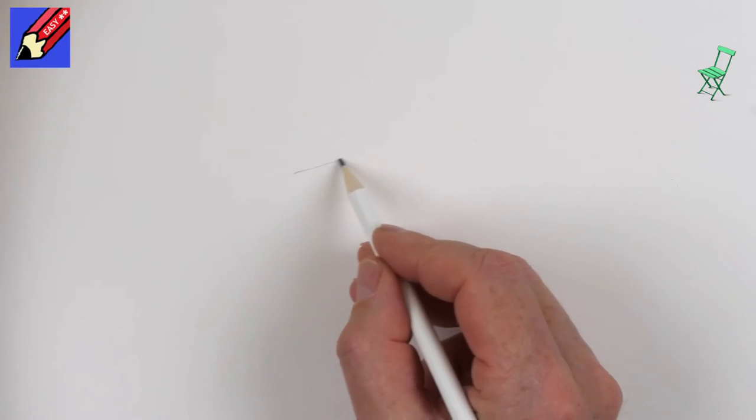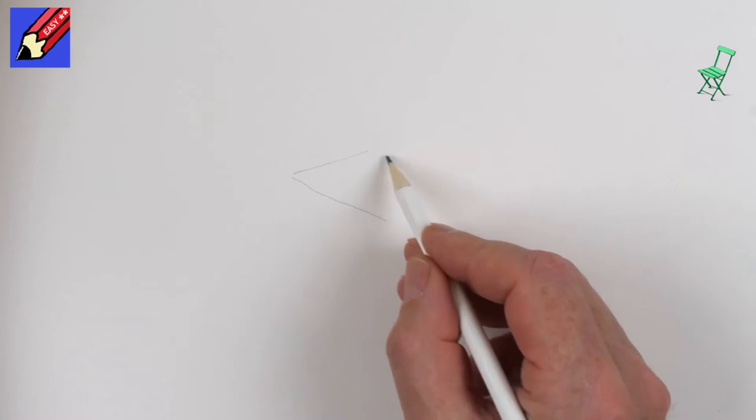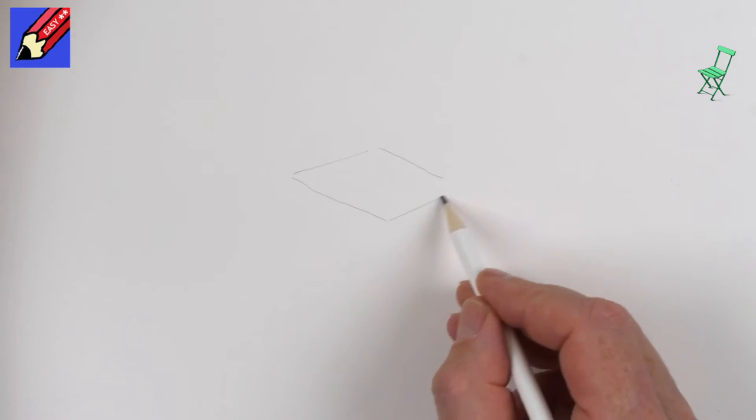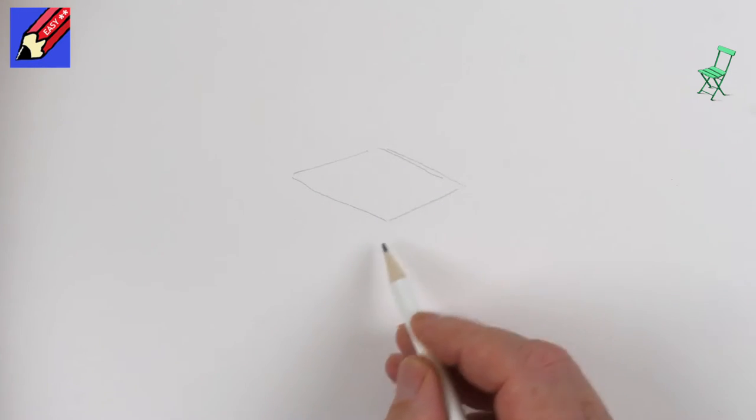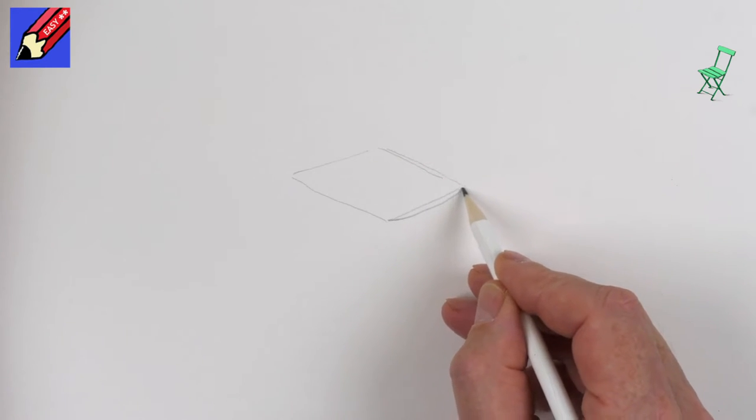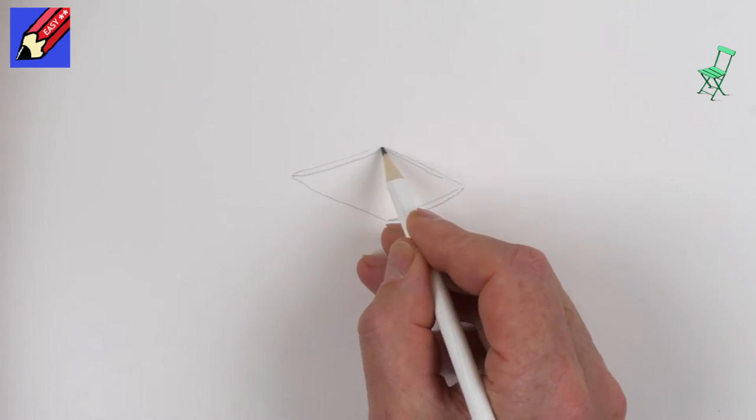We're going to start by drawing the seat and what we want to do is draw a kind of diamond or a parallelogram and I'm going to slightly curve it there, slightly curve it there.